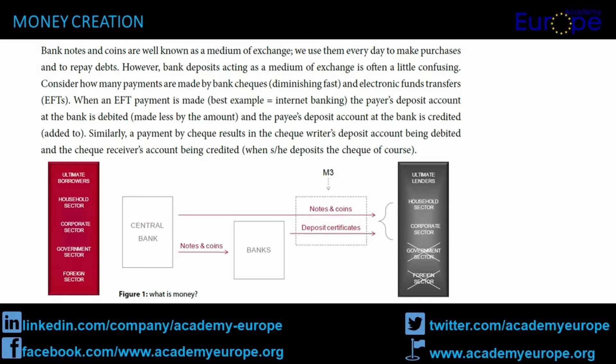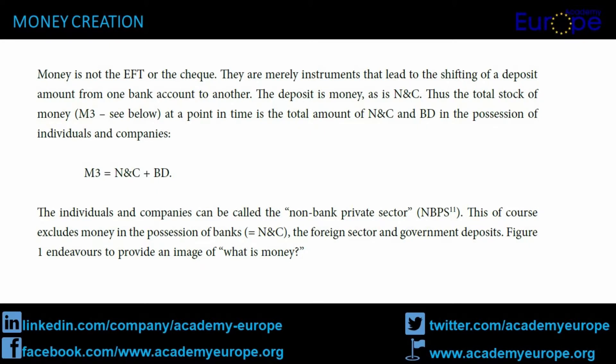Consider how many payments are made by bank checks (diminishing fast) and electronic funds transfers (EFTs). When an EFT payment is made — best example being internet banking — the payer's deposit account at the bank is debited (made less by the amount), and the payee's deposit account at the bank is credited. Similarly, a payment by check results in the check writer's deposit account being debited and the check receiver's account being credited when he/she deposits the check. Money is not the EFT or the check. They are merely instruments that lead to the shifting of a deposit amount from one bank account to another. The deposit is money, as is NNC.